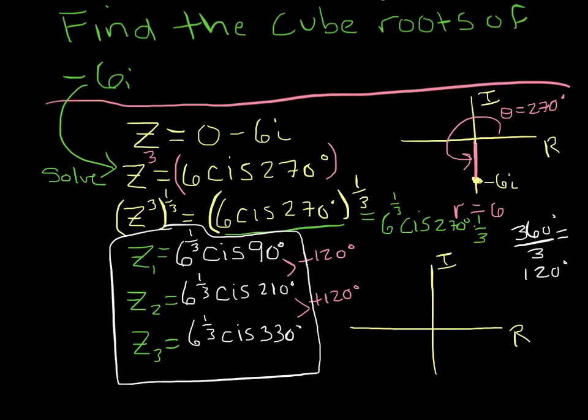So roughly it would be somewhere here I guess with an angle of 90 degrees. So my r, let's just say that this distance is cube root of 6. The next one is cube root of 6 at 210 which is an extra 120, so they'll be somewhere here, and then 330 would be somewhere here.